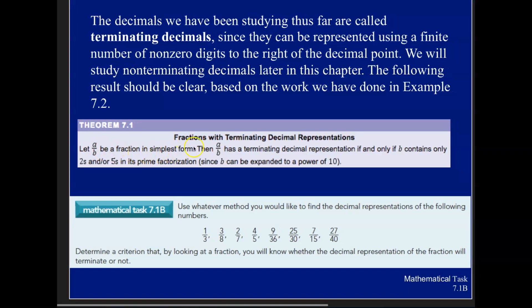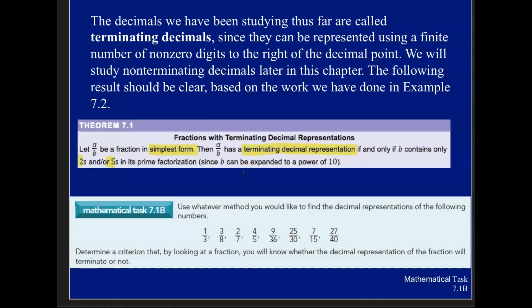A fraction in simplest form, and that's important there. A fraction in simplest form has a terminating decimal representation if and only if there are twos and or fives in the factorization, in its prime factorization, looking at b, the denominator.